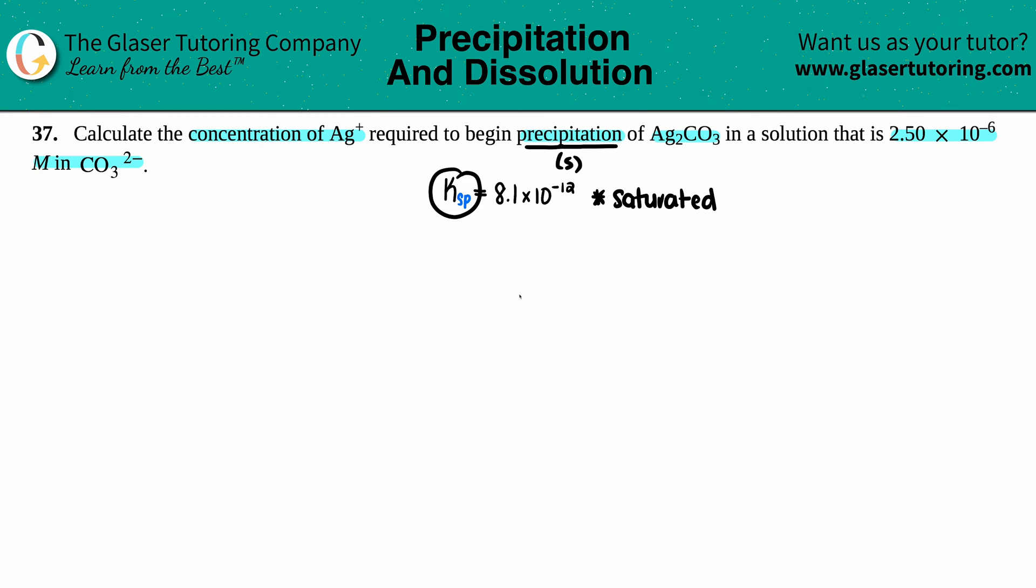Once we know that we can use the KSP, we have to have a balanced equation. I'm going to write the KSP equation for silver carbonate: Ag₂CO₃ solid dissolves into its two ions—Ag+ aqueous and CO₃²⁻ aqueous. Let's balance it. I have two silvers, so I need to put a 2 in front of the silver here. Now we're all balanced.